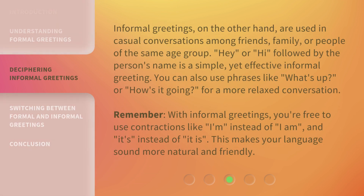Informal greetings, on the other hand, are used in casual conversations among friends, family, or people of the same age group. 'Hey' or 'hi' followed by the person's name is a simple yet effective informal greeting. You can also use phrases like 'what's up' or 'how's it going' for a more relaxed conversation. Remember, with informal greetings, you're free to use contractions like 'I'm' instead of 'I am,' and 'it's' instead of 'it is.'